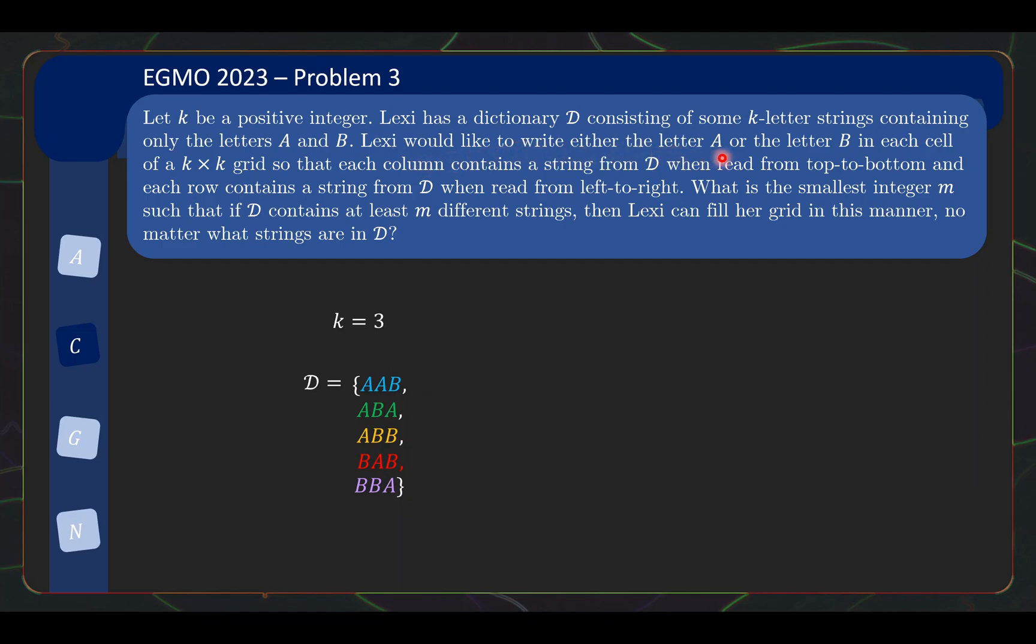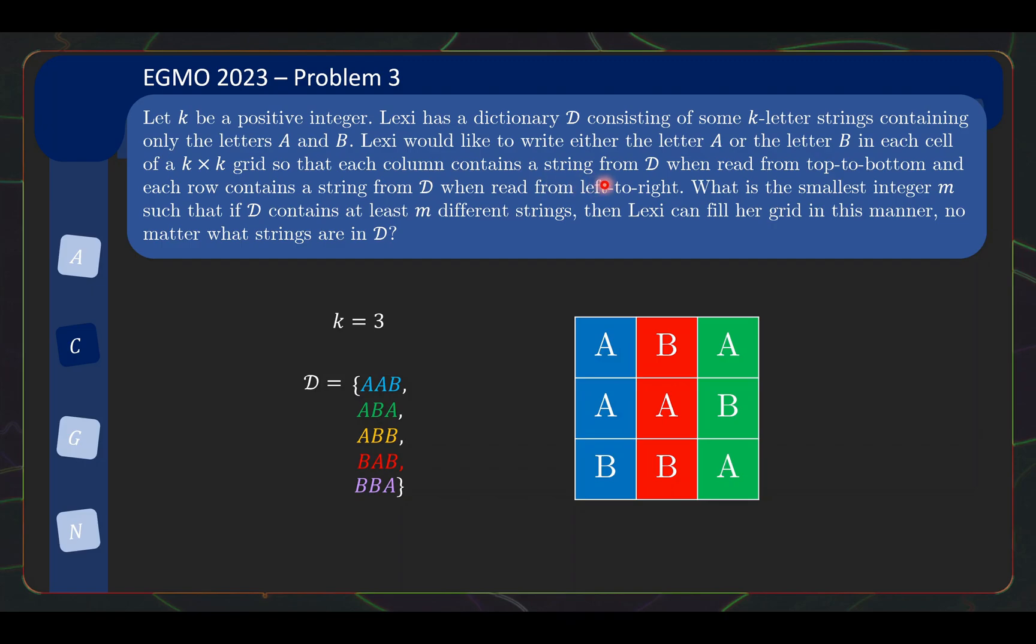Lexi would like to write either the letter A or B in each cell of a k by k grid, so that each column contains a string from D when read from top to bottom, and each row also contains a letter from D when read from left to right. The question is, what is the smallest integer M such that if D contains at least M different strings, then Lexi can fill her grid in this manner no matter what strings are in D?